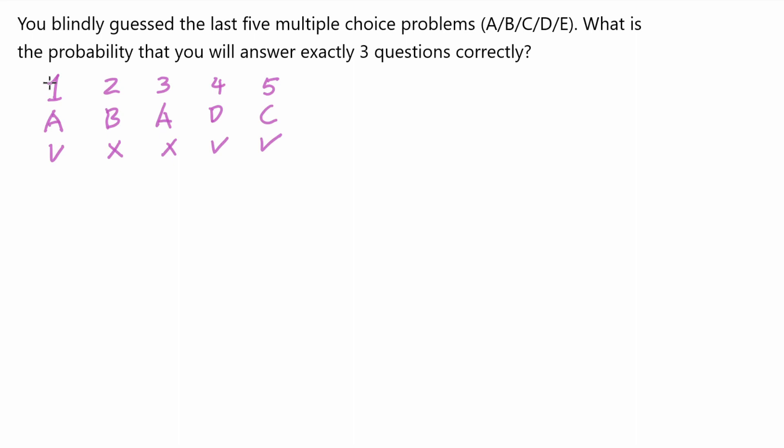The probability of getting one question correct if you guess randomly is 1/5. And the probability of getting it wrong would be 1 minus that.